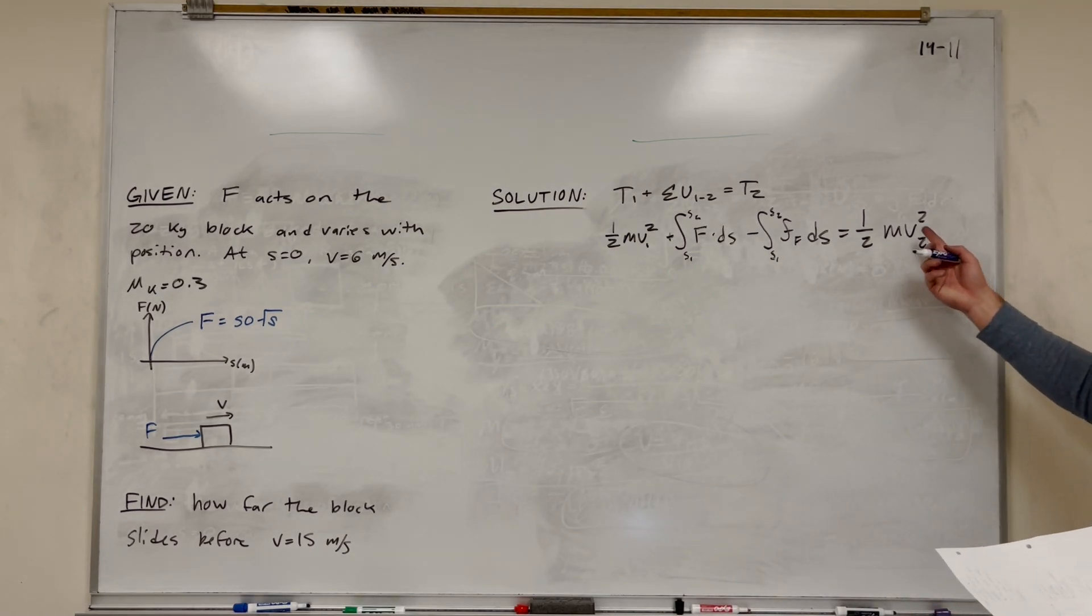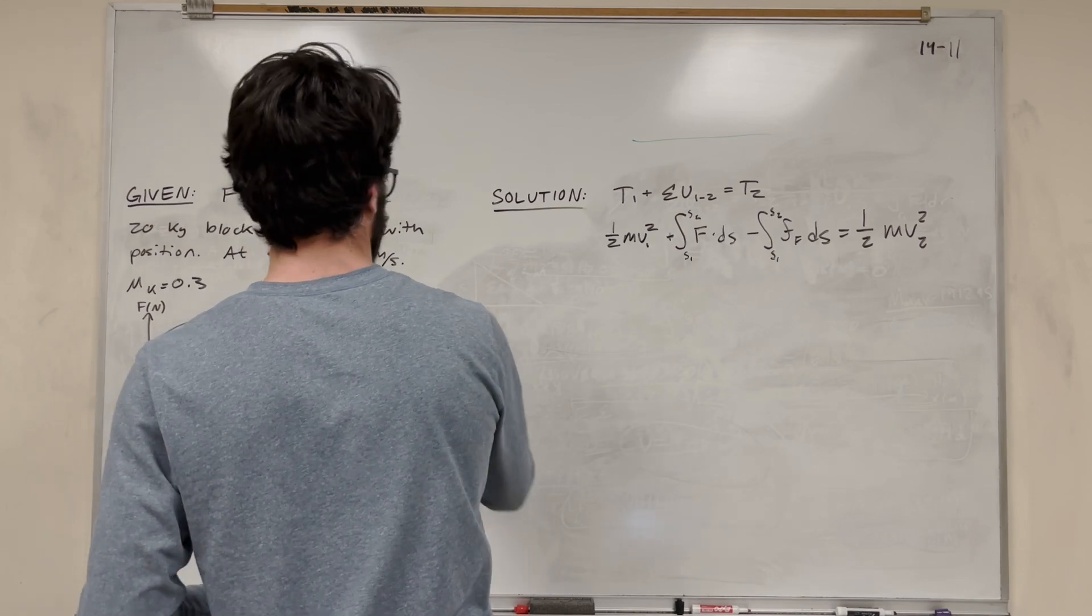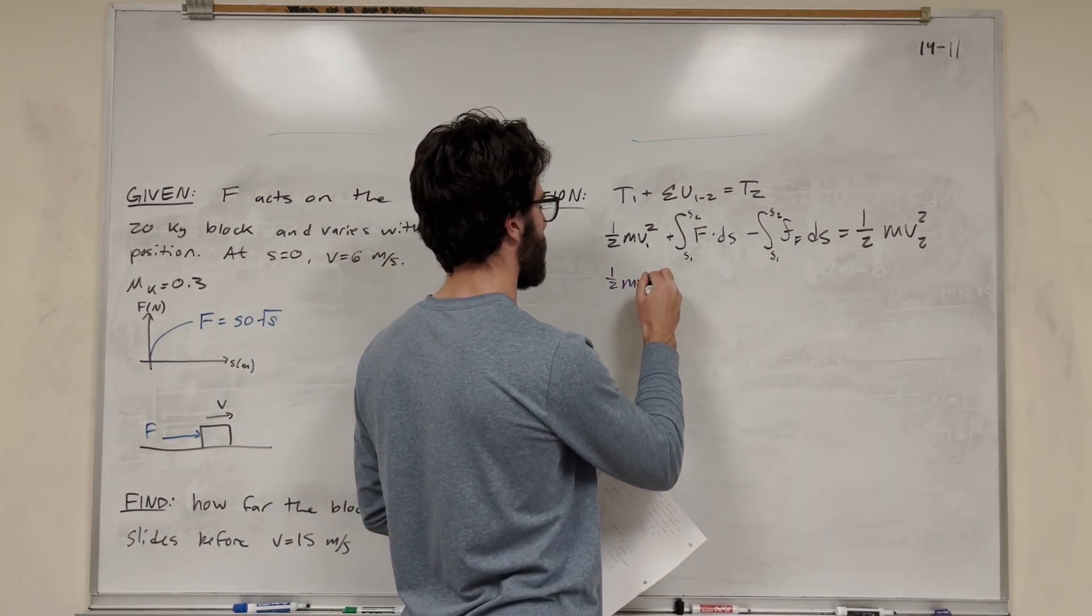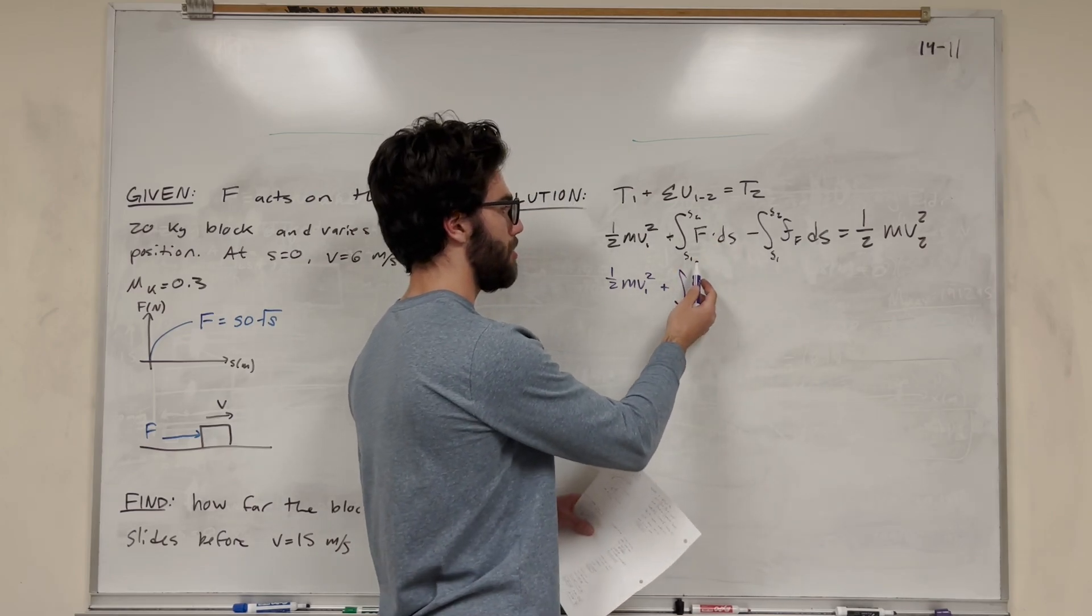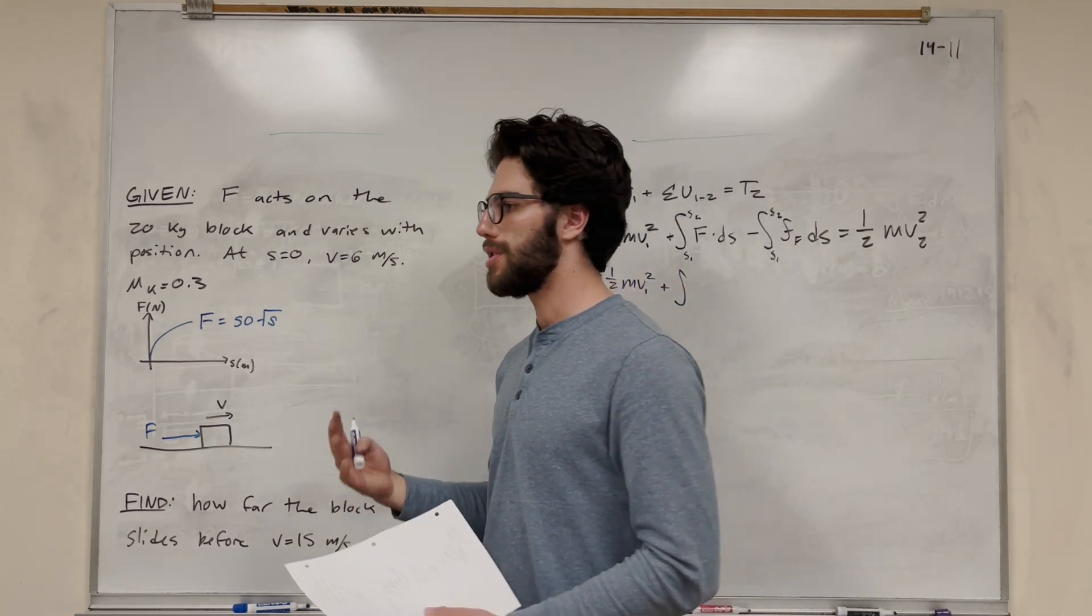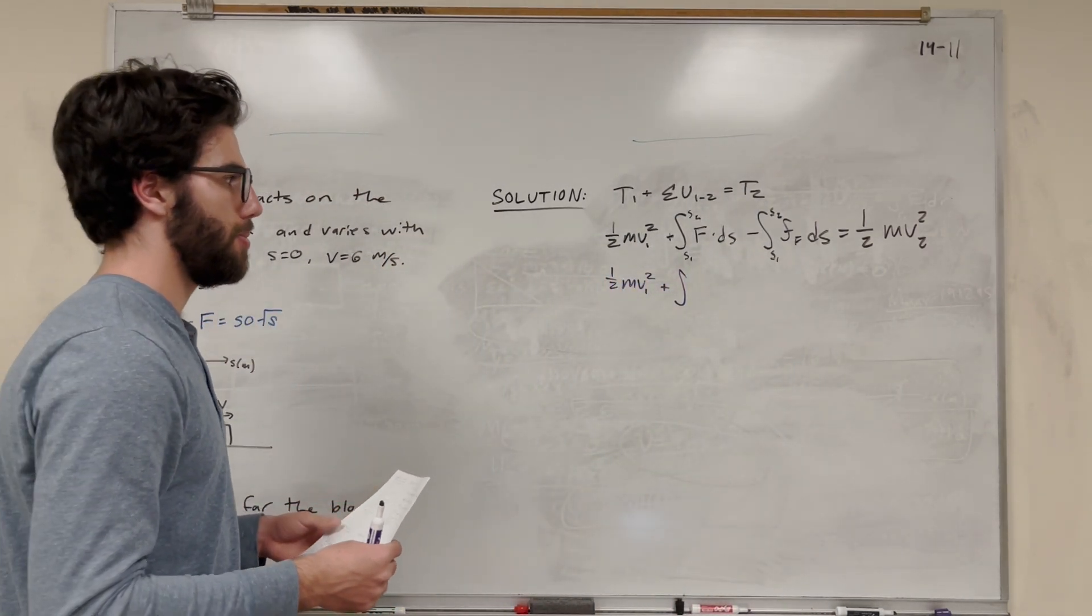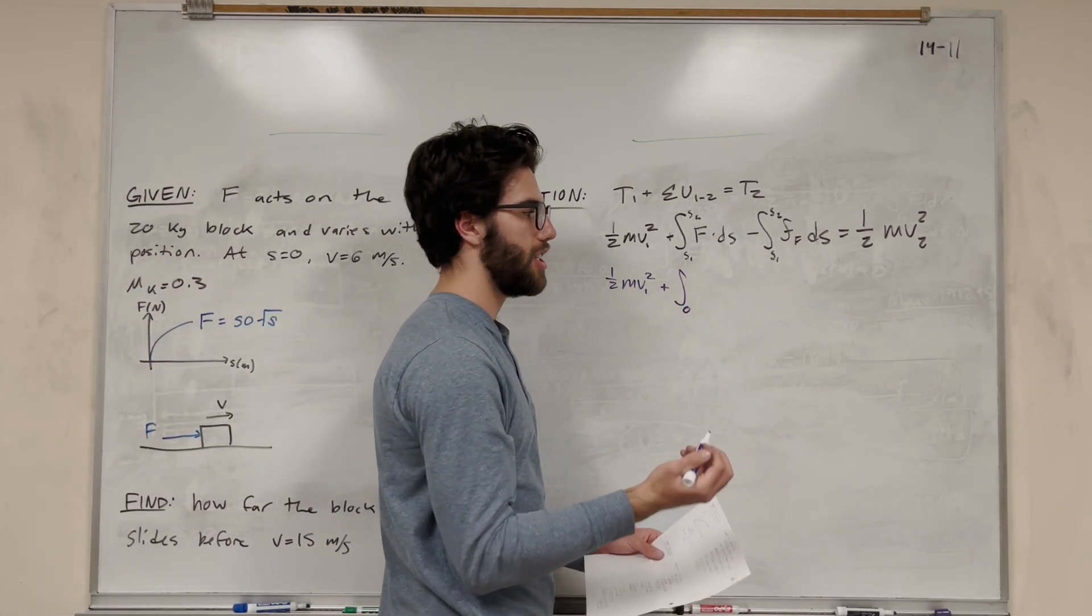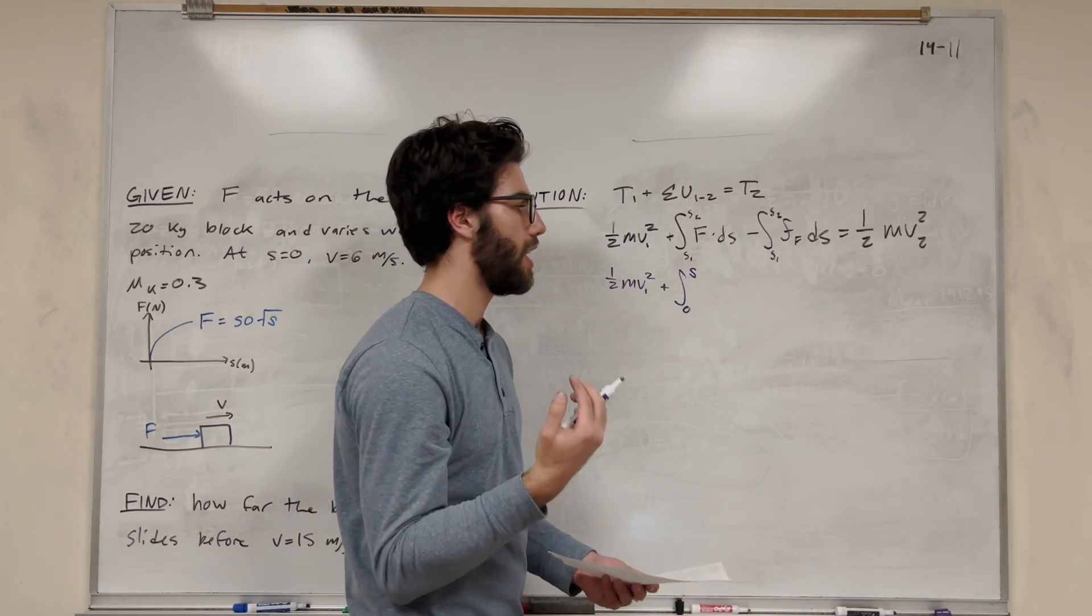Actually, no, we know what our final velocity is. We're solving for position. Now let's plug in our forces and what we know. The kinetic energy is going to stay the same, one-half mass velocity one squared. Our bounds are going to be what we're solving for. Initial position is zero and our final position is going to be s. We don't know what this s is yet, and that's what we're solving for, so we can label it s.